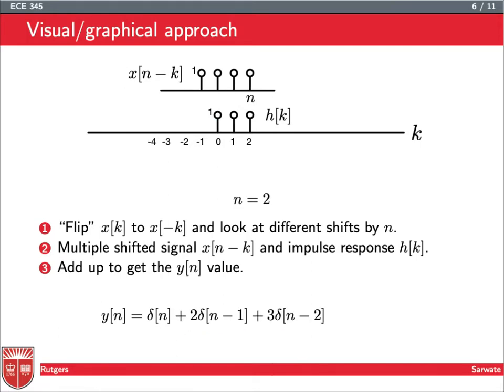Now I jump forward another step, so n equals 2 now. We see this overlap, we have 1, 2, 3 overlaps that are each a value 1, so when I multiply them together, I just get 1. So I get 3δ at time 2, which gives me this δ[n-2].